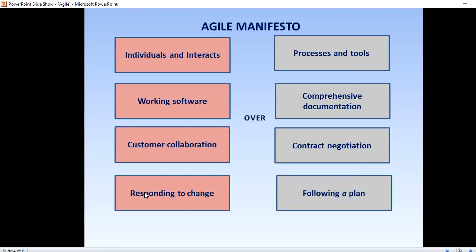The fourth value is responding to change over following a plan. The Agile Manifesto suggests that software teams should have the ability to pivot and change direction whenever needed, with a flexible roadmap. This dynamic roadmap can change from quarter to quarter, sometimes even month to month, and Agile teams are able to keep up with those changes.